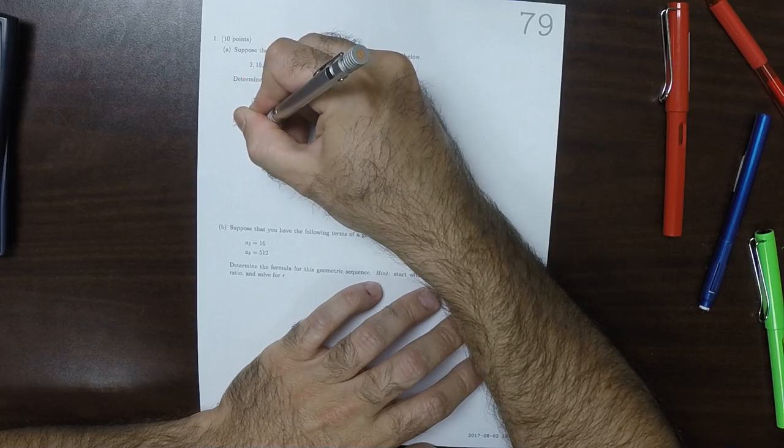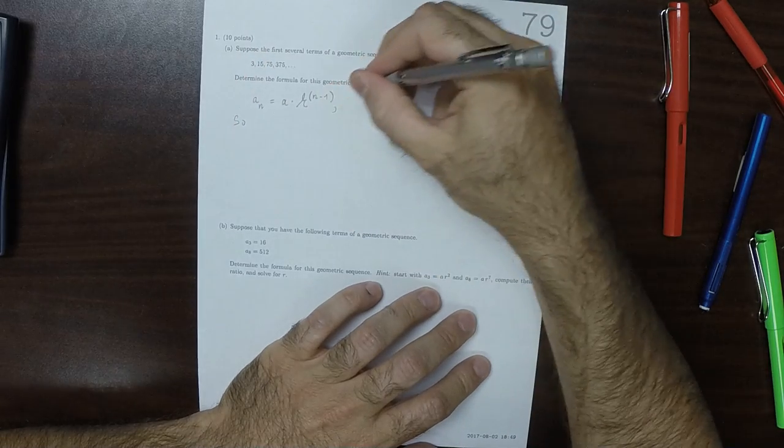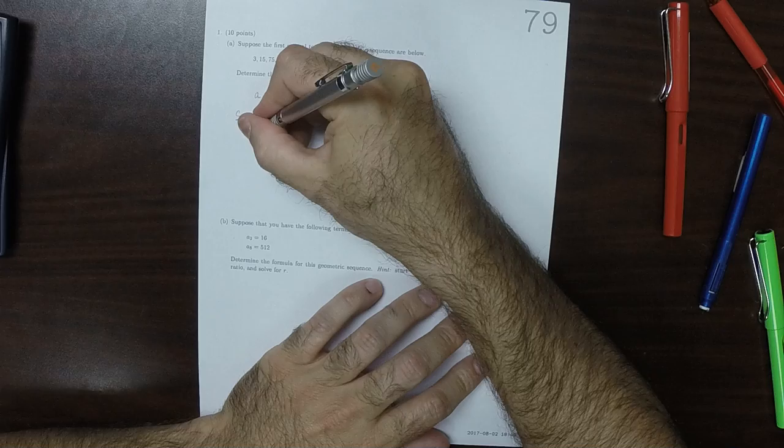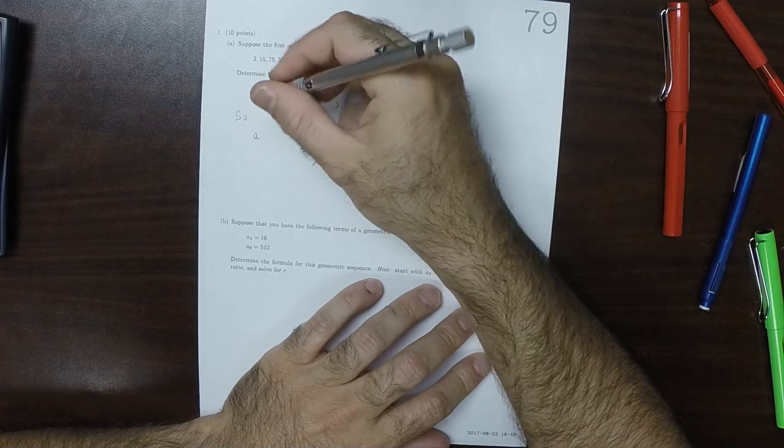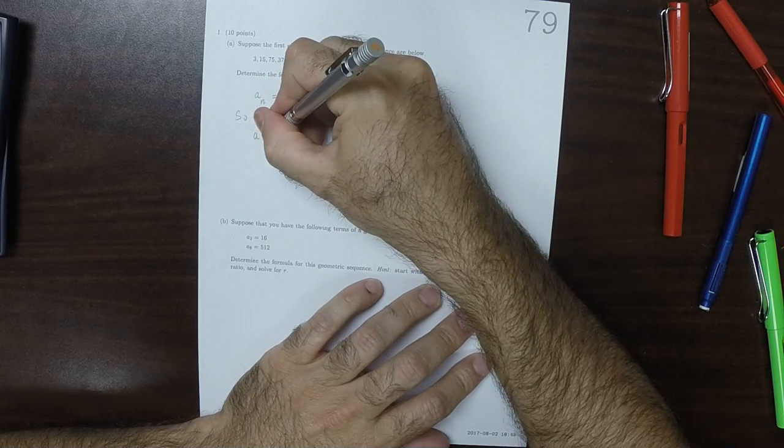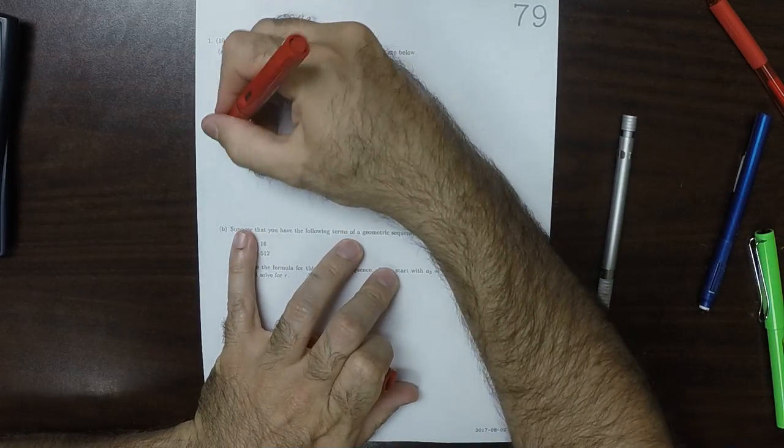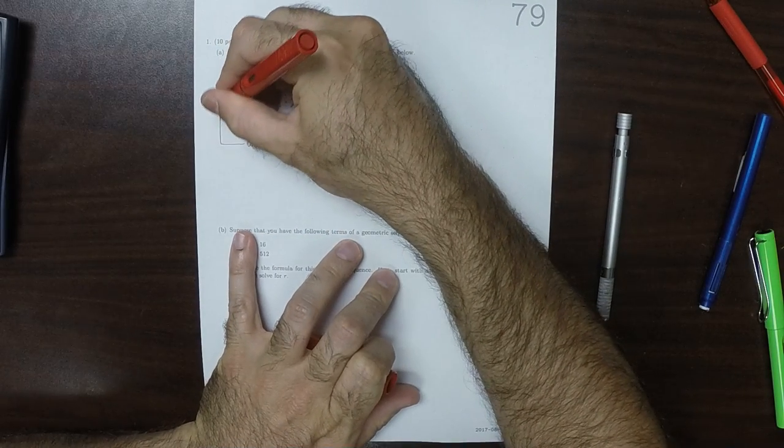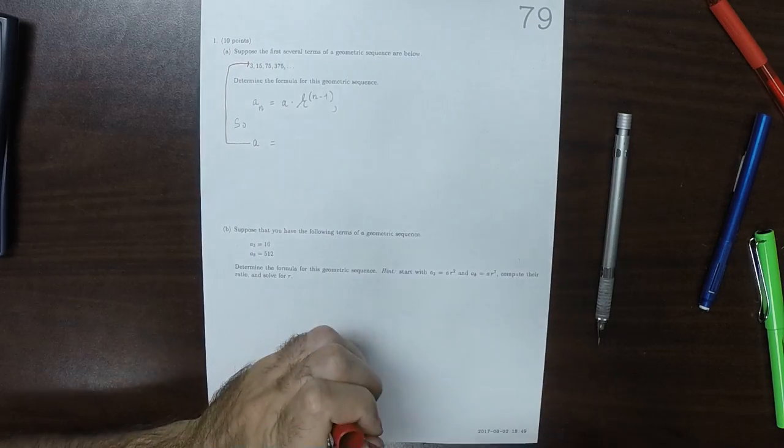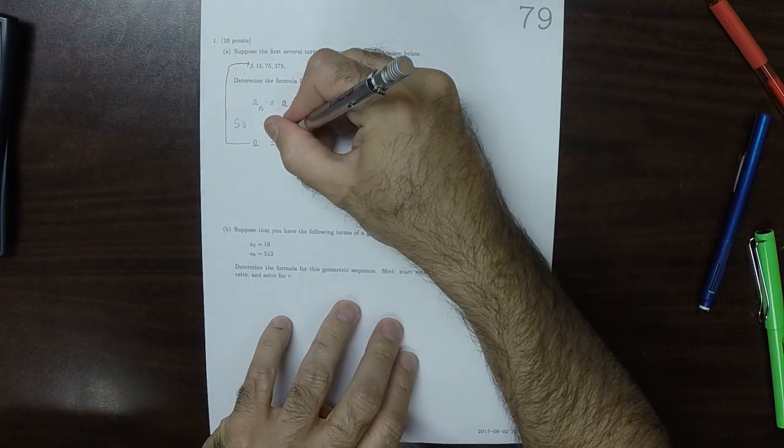So we need to figure out A. A is always the first term in the sequence, so that's easy enough. It's just this first term. So A is 3.